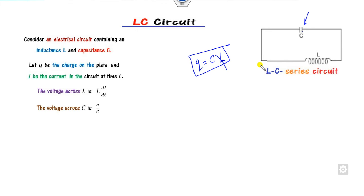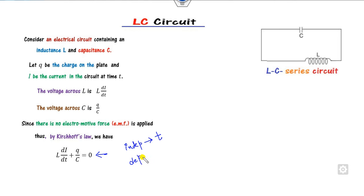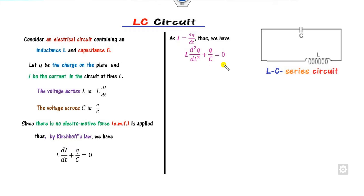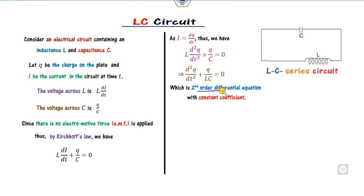Since there is no external source applied, by Kirchhoff's law the total voltage is zero. If an external voltage E is applied, then it equals E instead of zero. Since I = dQ/dt, substituting gives the second derivative, which is a second-order differential equation with independent variable t and dependent variable Q. Dividing both sides by L gives the standard form.